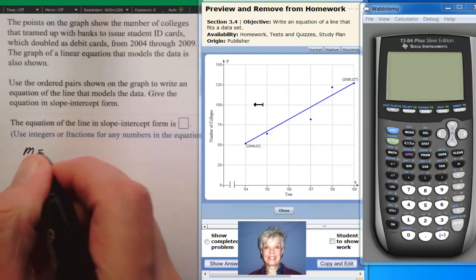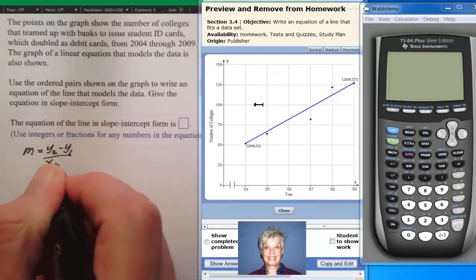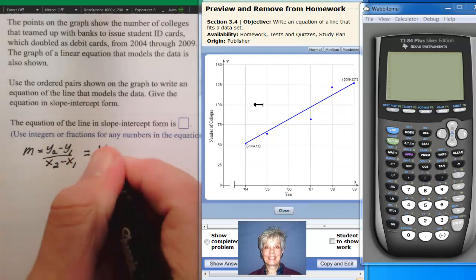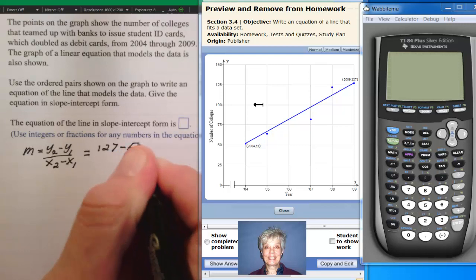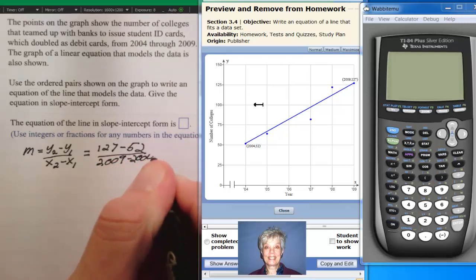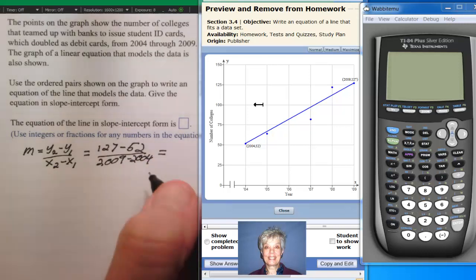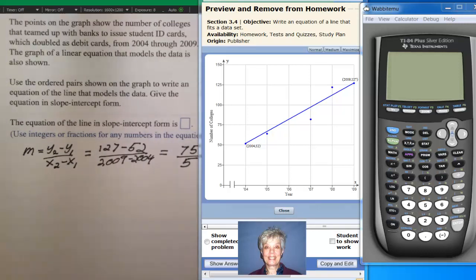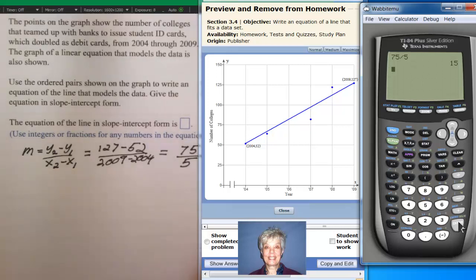If m equals y2 minus y1 over x2 minus x1, then that will give us 127 minus 52 over 2009 minus 2004. You can always use your calculator to figure out what this is. But 7 minus 5 is 2 and 12 minus 5 is 7 over 2009 minus 2004 is 5. Now 5 goes into 75. Let's use the calculator. So I'm going to turn it on and I'm going to say 75 divided by 5 and it's 15.